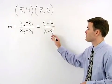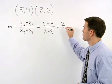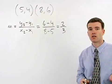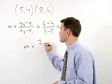So 6 minus 4 over 8 minus 5 simplifies to 2 over 3. So the slope of this line is 2 thirds.